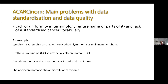A classical example is lymphoma, which can be reported as lymphosarcoma, non-Hodgkin's lymphoma, malignant lymphoma, or malignant lymphosarcoma — different names for the same entity. This seems pedantic, but having a standardized vocabulary is extremely important for the extraction and transformation process in a cancer registry.